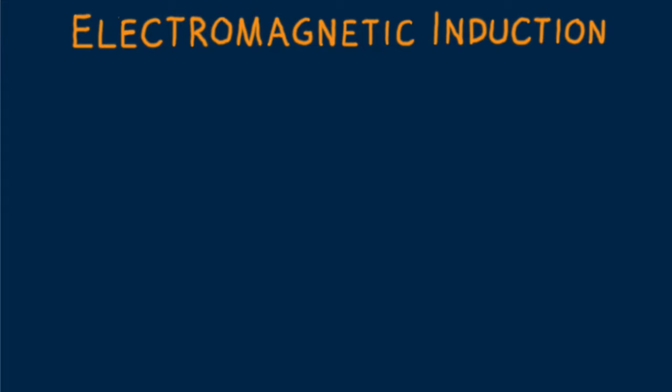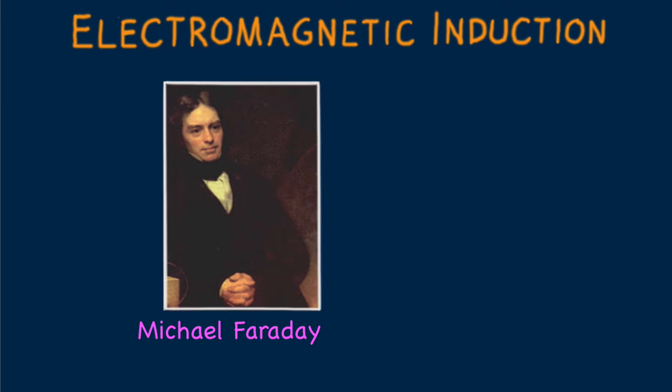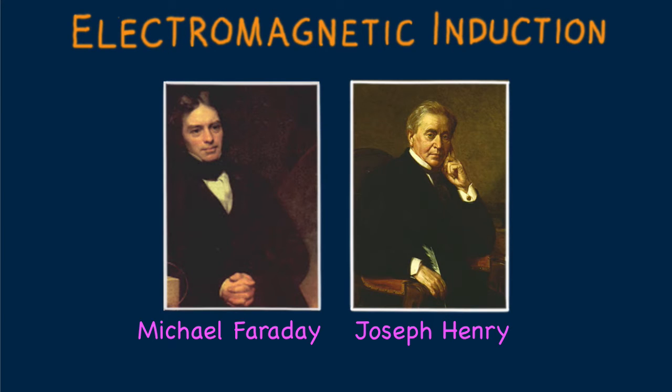In 1831, two physicists, Michael Faraday in England and Joseph Henry in America, made a discovery that was to change the world.